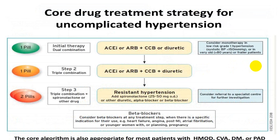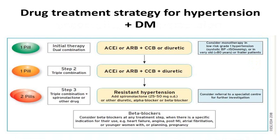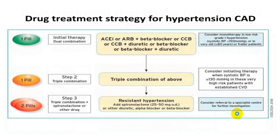In uncomplicated hypertension, a diuretic can be utilized as monotherapy, dual combination, or triple combination. Even in persons with diabetes, it can be used as monotherapy, dual combination, or triple combination. In a person with hypertension and coronary artery disease, diuretic is used in initial therapy as dual or triple combination.